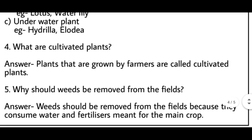Question four: what are cultivated plants? The answer is: plants that are grown by farmers are called cultivated plants. Aise plants jo kisanon ke dwara ugaye jaate hain unko cultivated plants kehte hain.